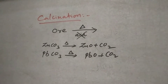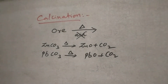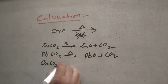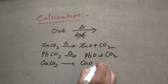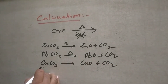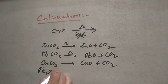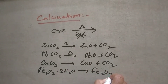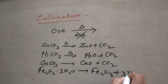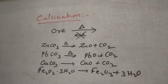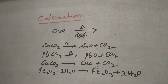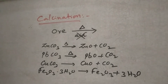Next, looking at the next example: copper carbonate — on heating you will get copper oxide plus carbon dioxide. Also, Fe2O3·3H2O on heating gives Fe2O3 plus 3H2O. Here, the ore is heated in the absence of air, so we can call it calcination.